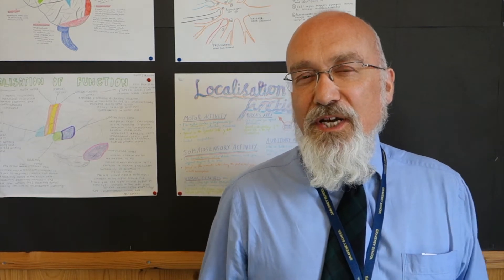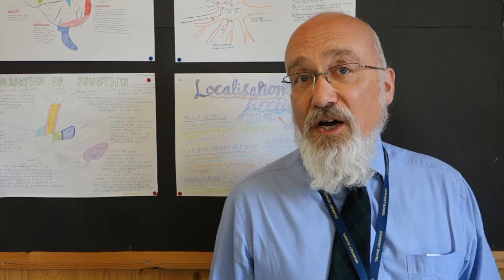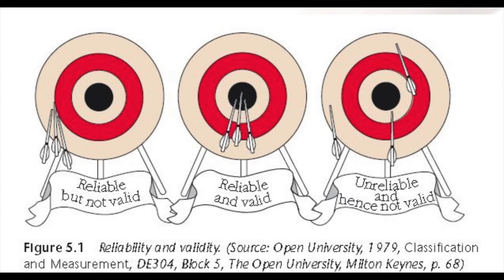We can illustrate reliability and the related concept of validity by looking at these targets. The target on the left and the target in the middle are reliable tests because the archer firing those arrows is getting the same result every time, hitting the same spot. The one in the middle is also valid. The one on the left is reliable but not valid because it's not getting the right answer — it's the same every time but it's the same wrong answer. The one in the middle is reliable and valid.